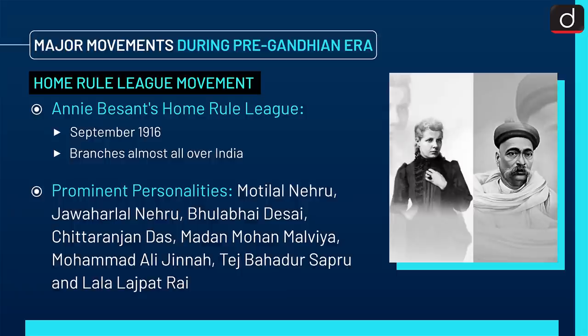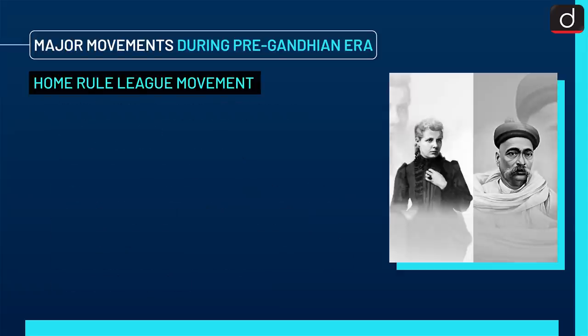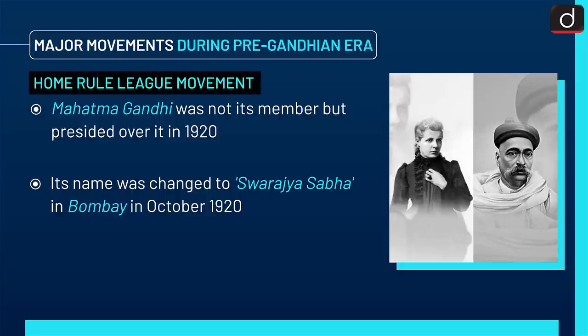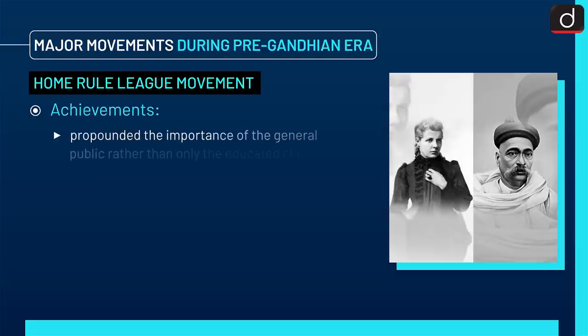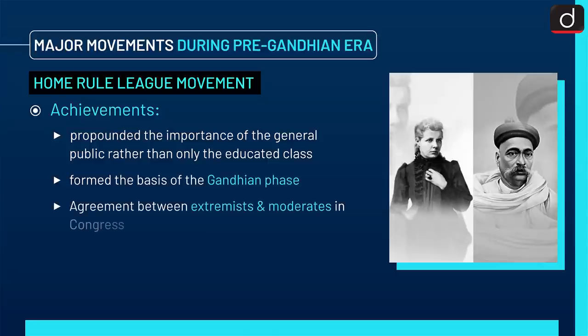Mahatma Gandhi was not a member of the Home Rule League but presided over it in 1920. Its name was changed to Swarajya Sabha in Bombay in October 1920. Achievements of this movement included propounding the importance of the general public rather than only the educated class, and it formed the basis of the Gandhian phase by bridging agreement between extremists and moderates in Congress.